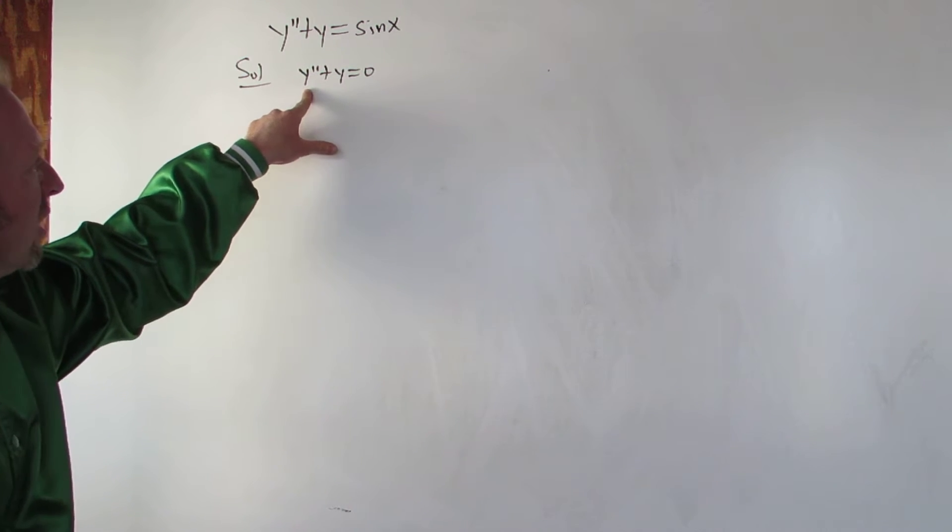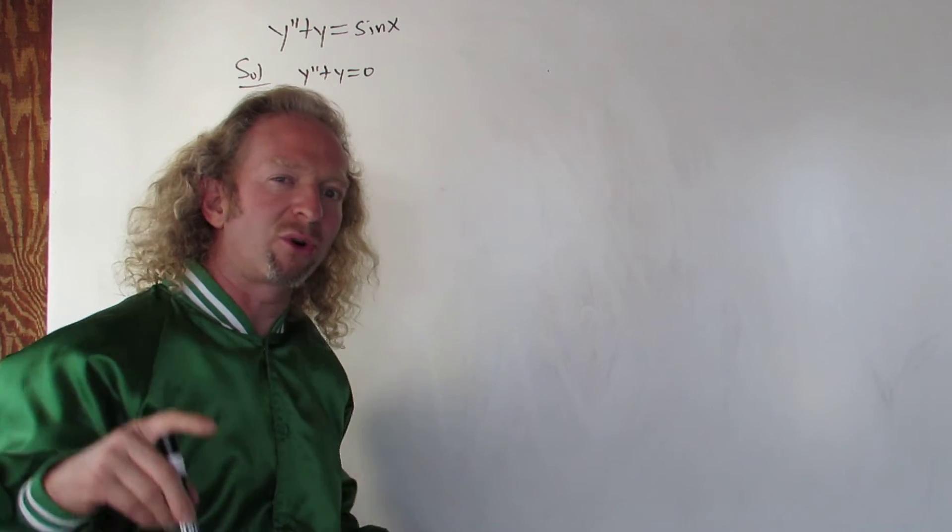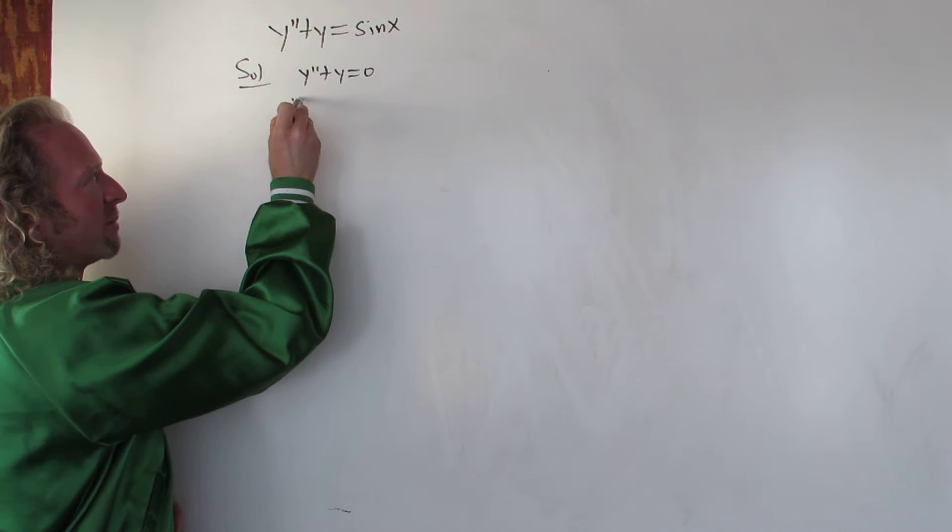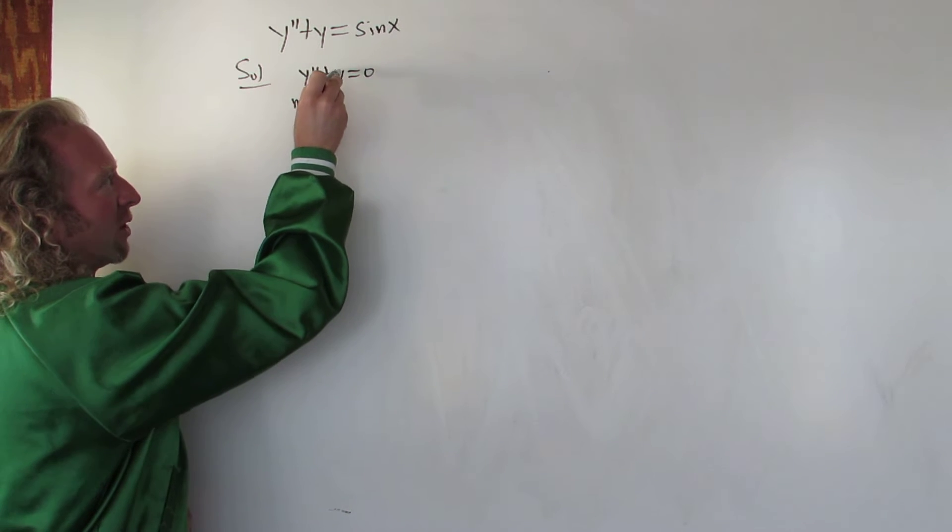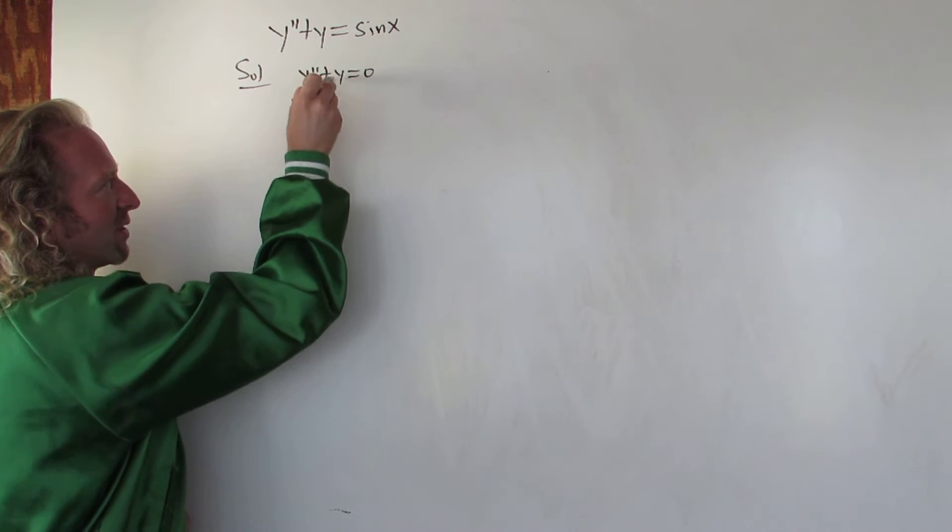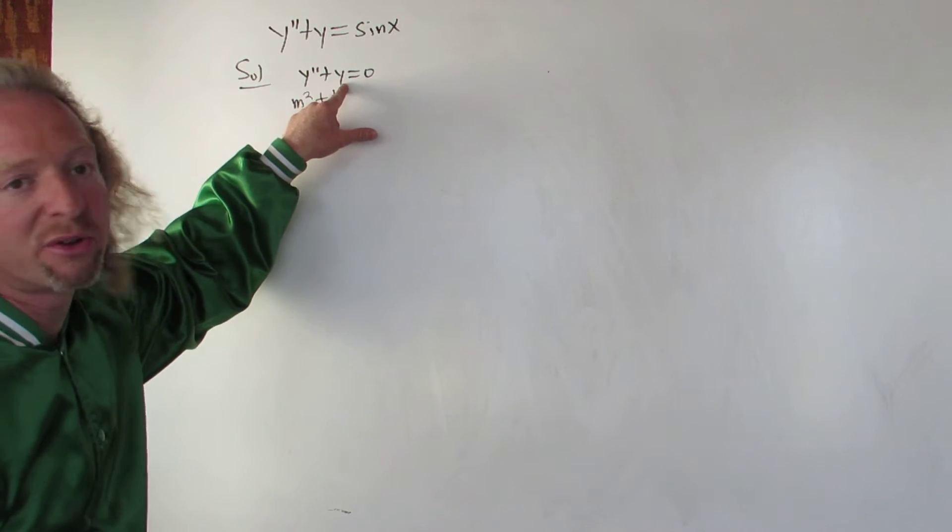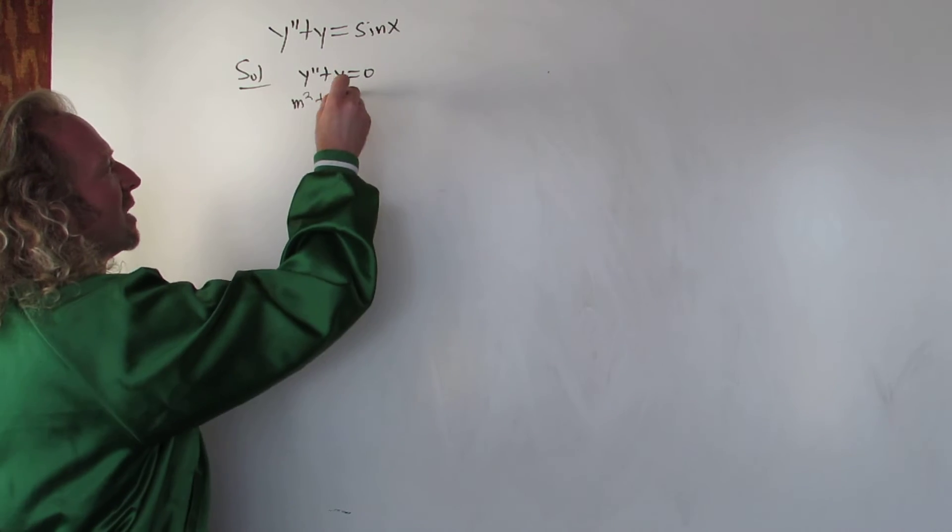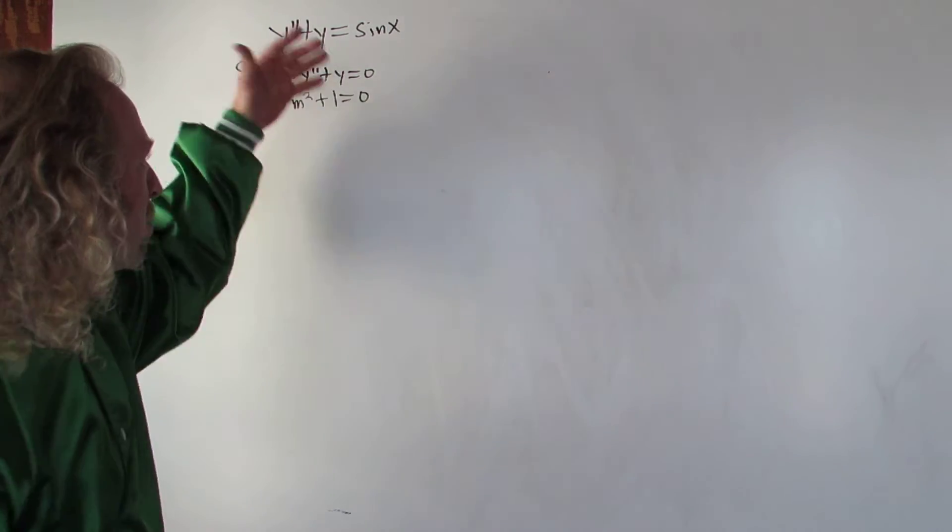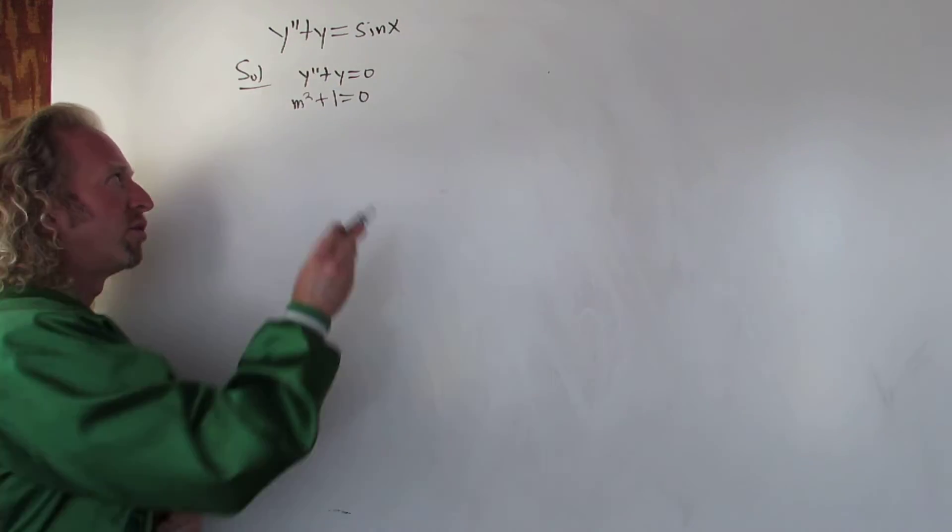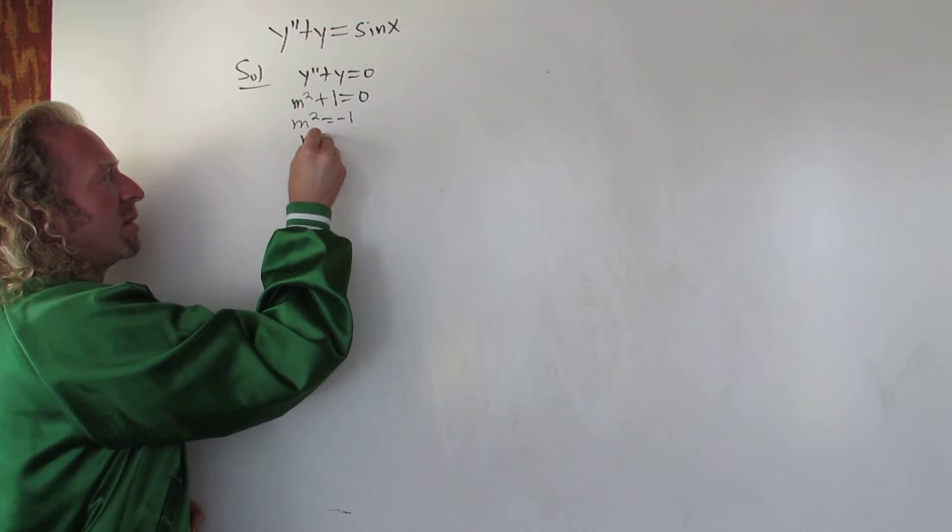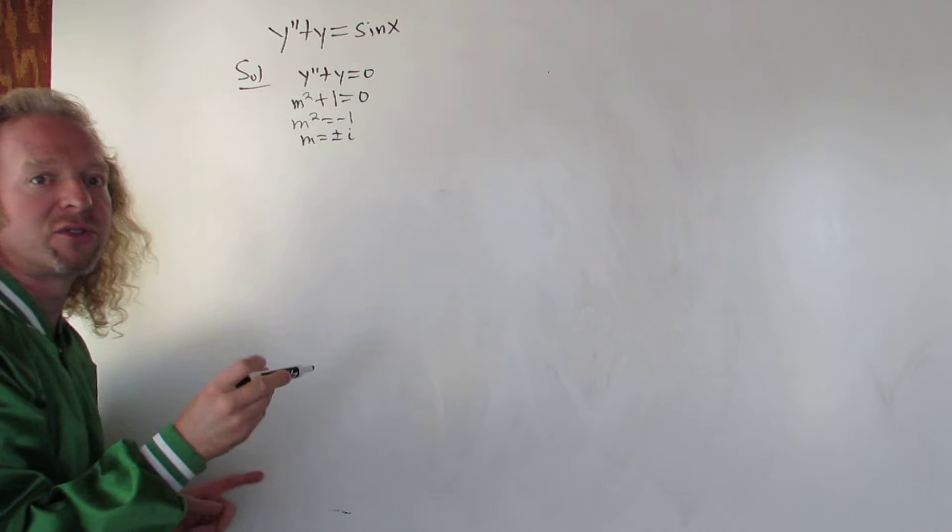To solve this, we can write down the characteristic equation or the auxiliary equation. There's a second derivative, so it's m squared, and then here there's a 1. This is the 0 derivative, so it's m to the 0, so it's just 1. That's equal to 0. Subtract 1, so you get m equals plus or minus i.